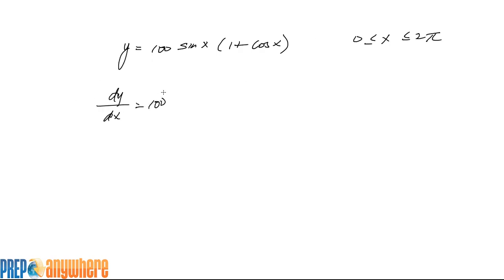Leave the 100 there. Differentiate the sine to get cosine of x, so you get 1 plus cosine of x. Plus sine of x, and this will become, if you differentiate that, minus sine of x.